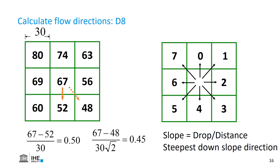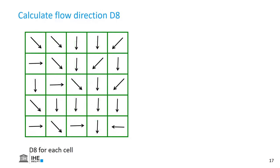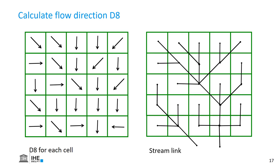So the correct answer of the flow direction was number 4 — it's the direction to the south. We do that for every cell, and then we can link the lines that flow in the same direction, and in this way we can construct the stream network. The map on the right side is called the stream link map.